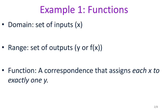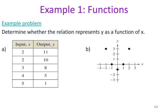Now applying that definition to an actual example, we want to determine whether this table and this graph represent a function. Going back to the definition, each x has only one y — each x should have a unique y. If I look at my table, I have an x of 2 which goes to 11, as well as another x of 2 which goes to 10. So my 2s do not have a unique y — my 2 is going to both 10 and 11.